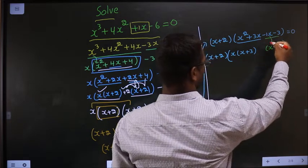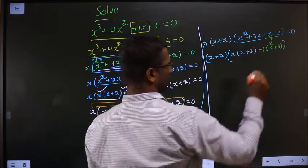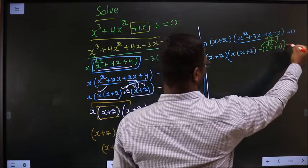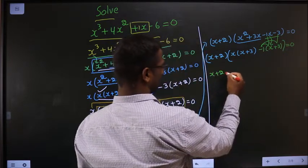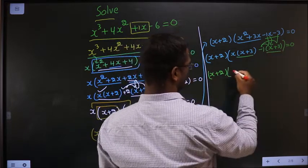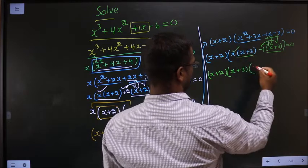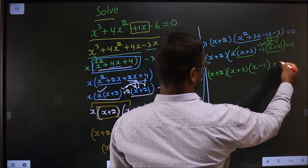That means x has gone inside. So outside should be minus 1. If in doubt you can multiply and see. Next, now I take x plus 3 common. So here I am left with x and here I am left with minus 1 equal to 0.